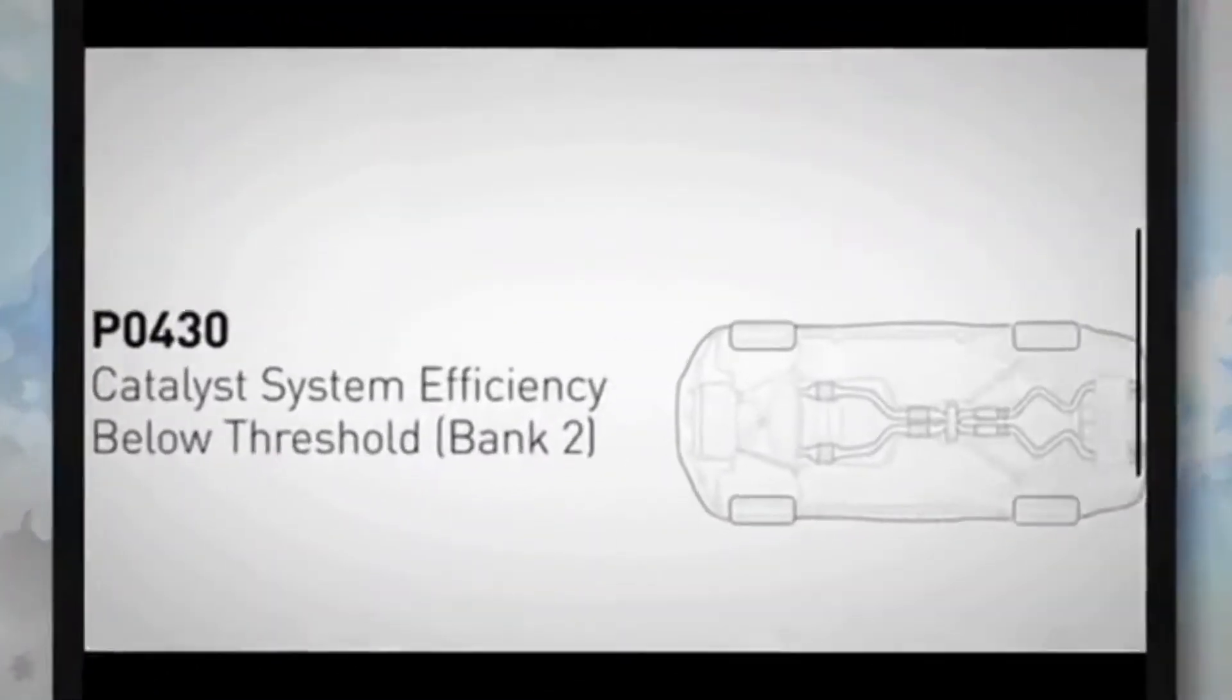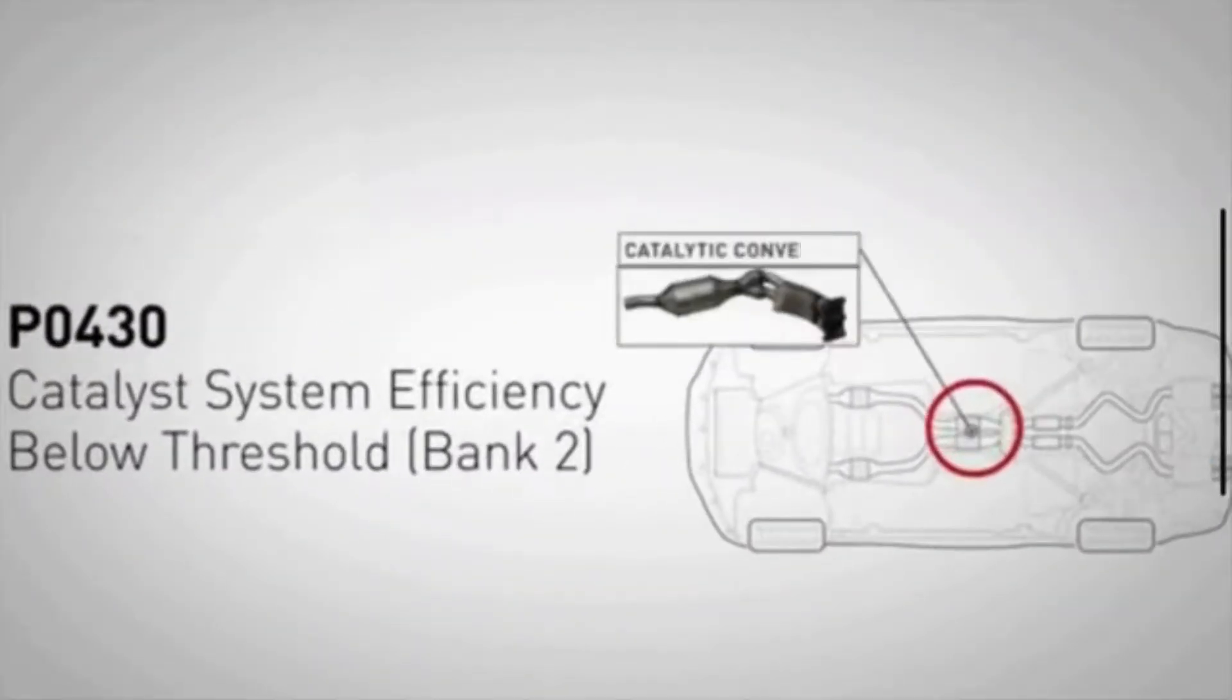The P0430 code is a generic powertrain code that indicates a problem with the catalytic converter in Bank 2. This code means that the downstream oxygen sensor detects that the catalytic converter is not working as efficiently.